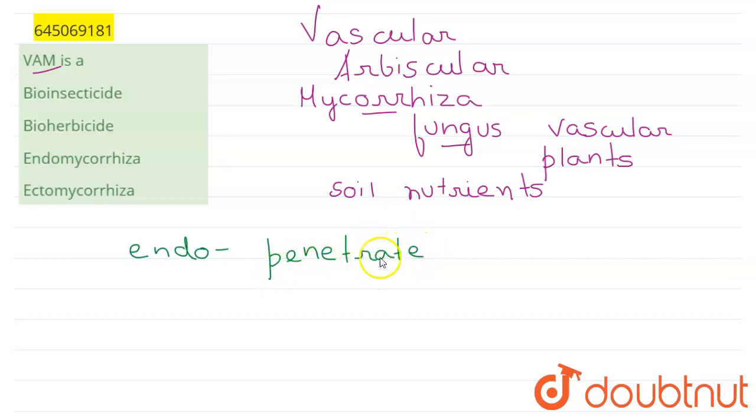If it was an ectomycorrhiza, then they wouldn't have penetrated deep into the root. So endomycorrhiza are the species of fungi which penetrate deep, and they help in absorption of nutrients from the soil. VAM is an example of an endomycorrhiza.